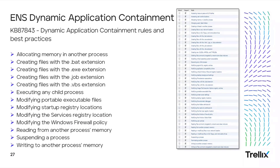Now let's look at dynamic application containment. DAC is a component of ATP designed to block or log unsafe actions of an application based on containment rules. Some of the more common rules violated with entry vector threats include: allocating memory in another process, creating files with bat, EXE, job, or VBS extensions, executing any child processes, modifying portable executable files, modifying startup registry locations, modifying the service registry location, modifying the Windows firewall policy, reading from another process memory, suspending a process, and writing to another process memory.